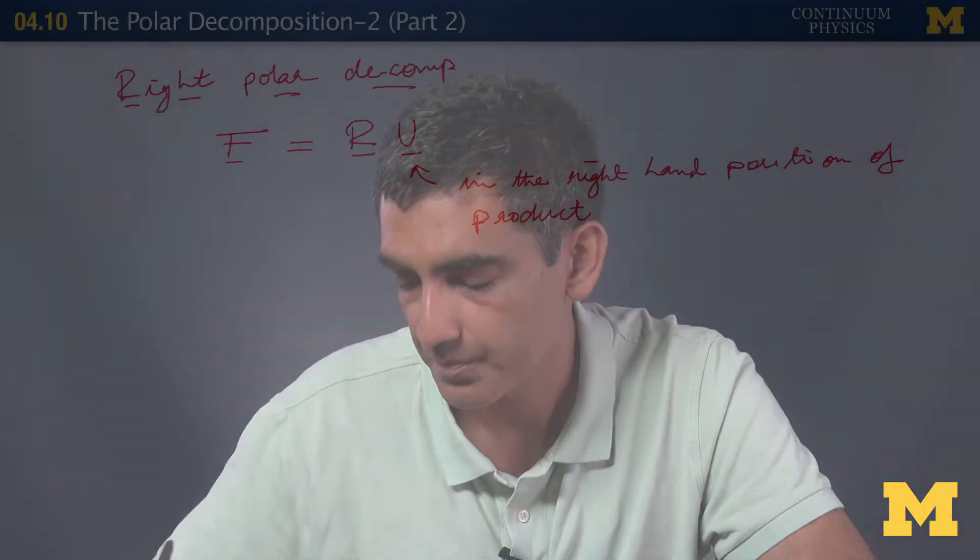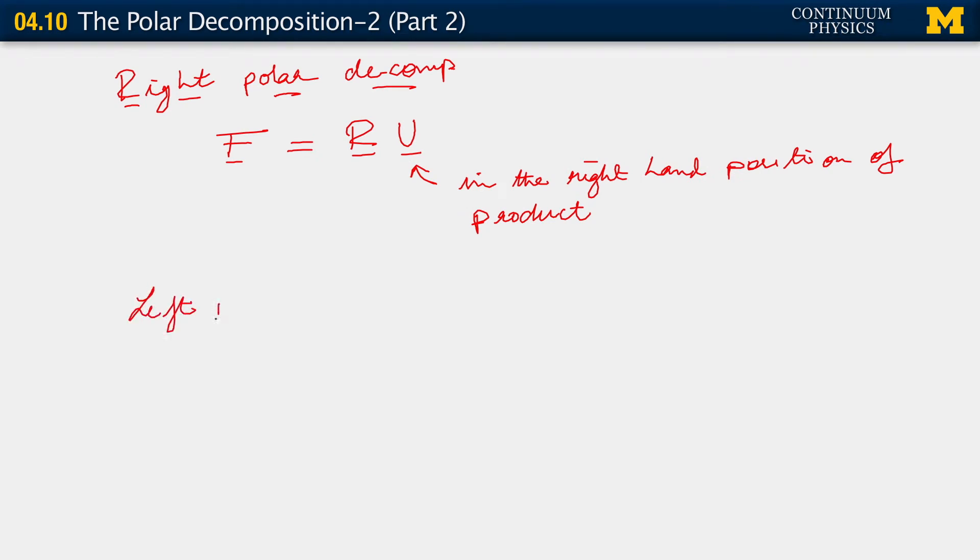That ought to get you wondering, is there a left polar decomposition? Indeed there is. There also exists a left polar decomposition, which is that we can simply write F also as the product of a rotation tensor and a positive definite symmetric stretch tensor. But this product is written as VR. This is called left because in this case this is the stretch tensor. It's called the left stretch tensor. And for the same reason, U that we've been calling the stretch tensor is also called the right stretch tensor.